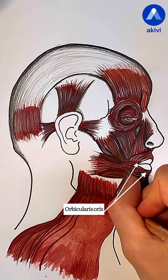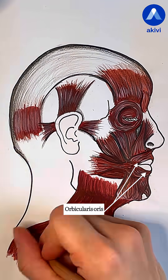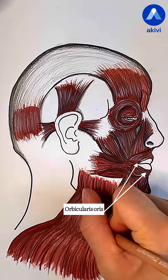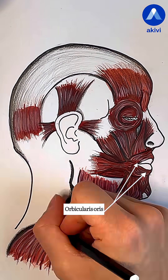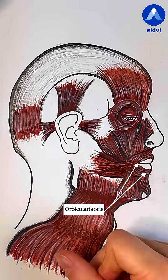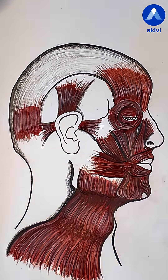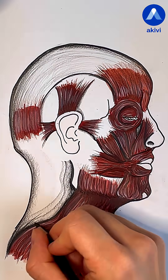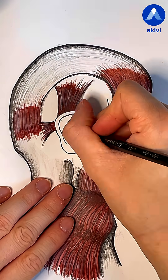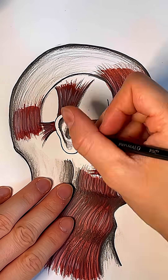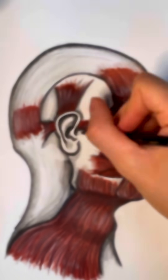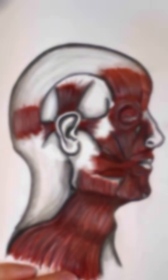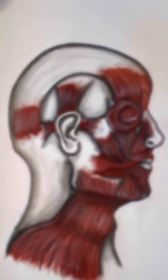The main constrictor is the orbicularis oris, the muscle that surrounds the mouth. It allows us to close the lips, pucker them, and it plays an important role in both speech and chewing. The second is the compressor labii muscle, which helps with suction. Thank you for watching, and if you'd like more information, visit Kiwi.